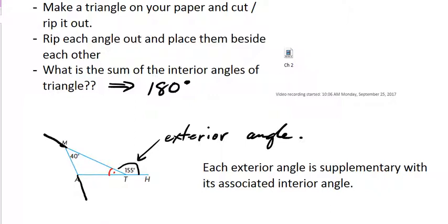This angle over here is 40, so its exterior must be 140. These two angles we know are supplementary. We're assuming that the interior angles of a triangle add up to 180. So this remaining angle would be 115, since 40 plus 25 is 65, and 65 plus 115 is 180. So the exterior angle supplementary to 115 would be 65.